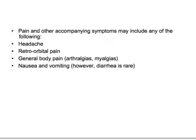Initially patients present with fever and pain, but the characteristic features of dengue are absent in the initial stages, making diagnosis difficult. There is no specific treatment for dengue, so you must admit and monitor the patient carefully. If the child is old enough, they can describe headache, retro-orbital pain, arthralgias, myalgias, nausea, and vomiting. Diarrhea is rare.